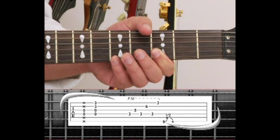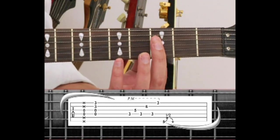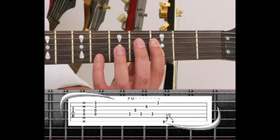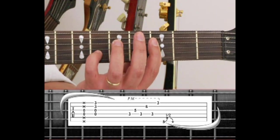Next we play an Fsus2 chord, which is held by barring the 3rd fret with the index finger on strings 1 through 4. Add the 2nd string 6th fret with the pinky and the 3rd string 5th fret with the ring.